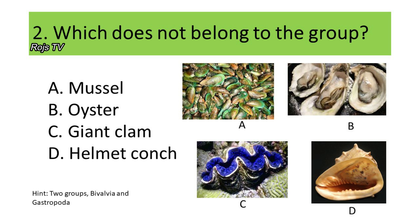These organisms can be grouped into either bivalve or gastropod. If your answer is D, helmet conch, you are correct, because this is a univalve or gastropod, while the mussel, oyster, and giant clams are bivalves.